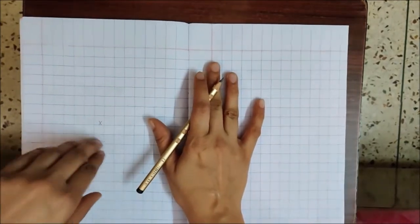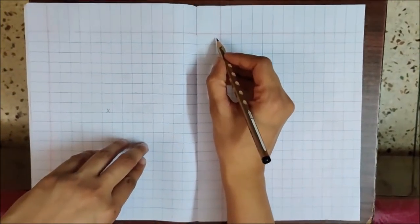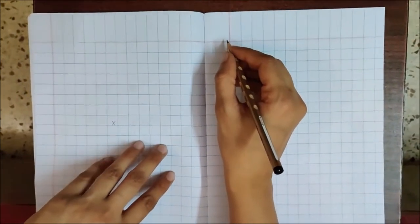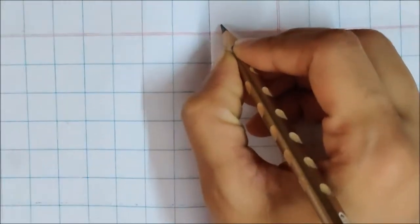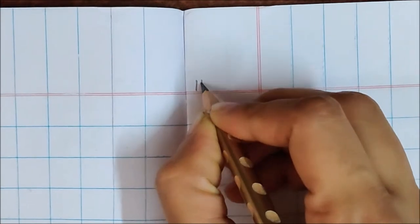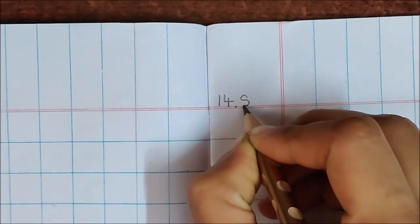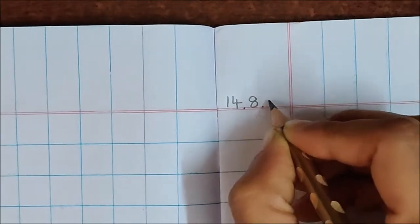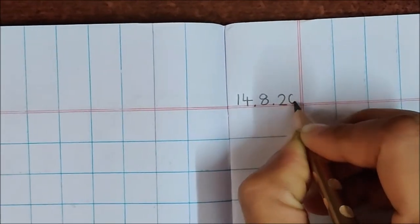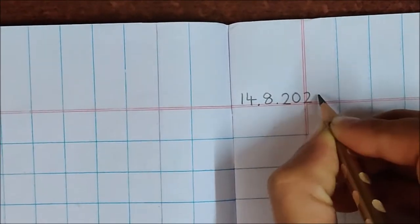Now on this page, write down today's date. Today is August 14. So write the date. 14.8.2020.